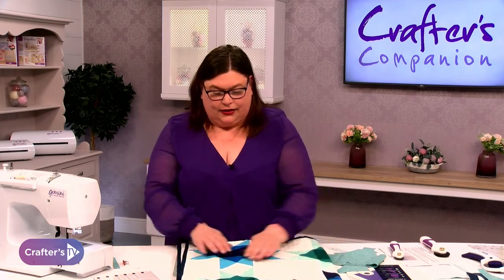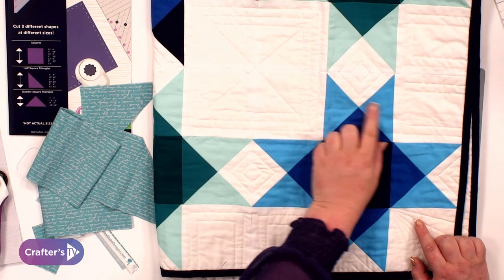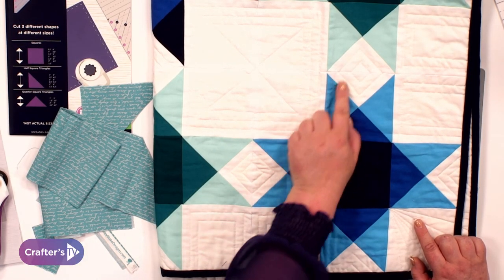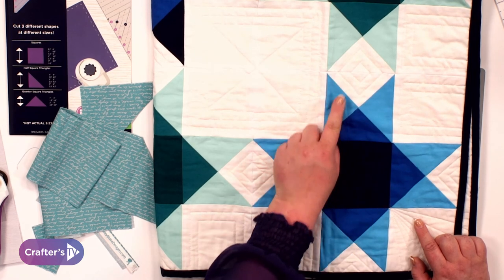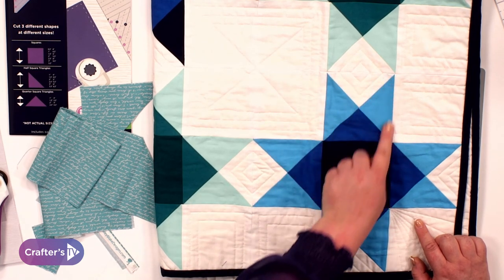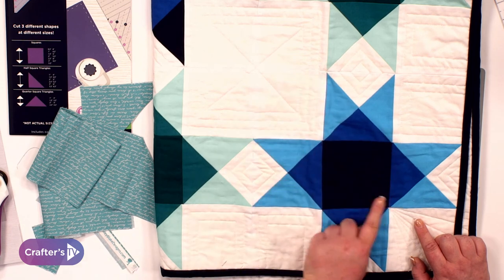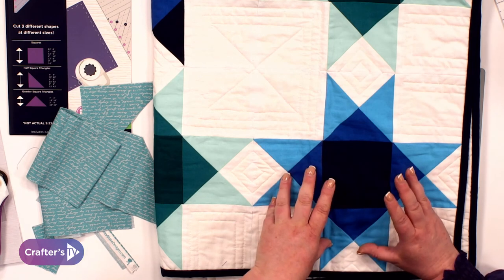So this sample here is a fantastic example of that quarter square triangle in action. We've got four here all sewn together. They actually then make the square which then are the same size as this square. So that's how you can start putting them together.